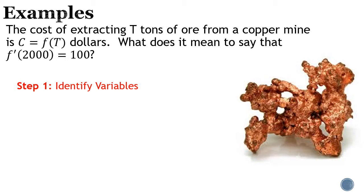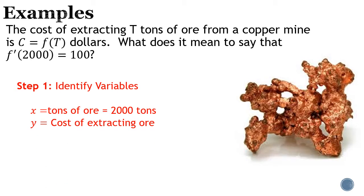In this problem, f(t) tells you that t represents x, and t is the tons of ore from a copper mine. So x equals the tons of ore — and in the statement we're interpreting, that's 2000 tons. Then y is your cost: the cost of extracting the ore.